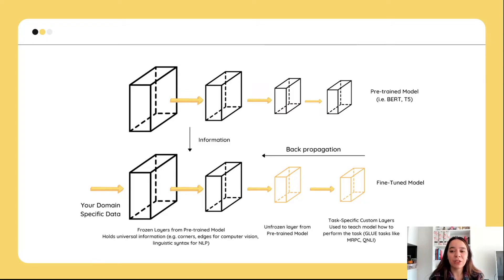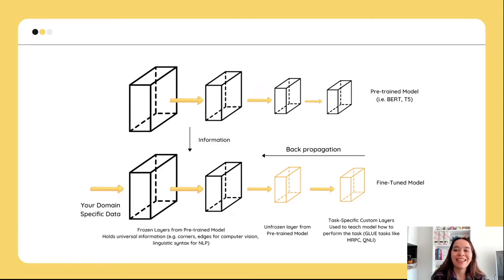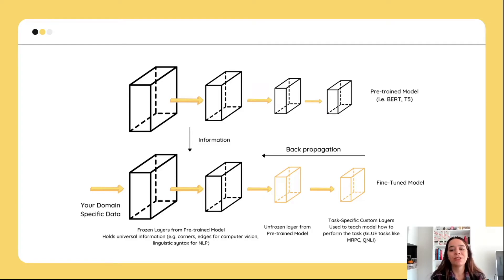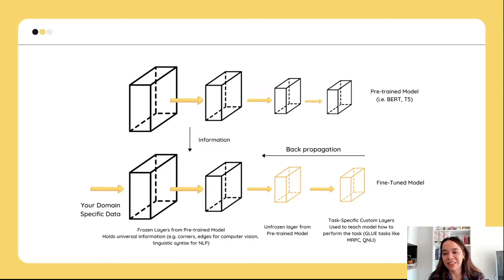First I want to go through a concept called transfer learning. Think that someone has trained a big model for you, trained on data that has the size of petabytes — a model that has billions of parameters. The first layers of this model contain very shallow information like corners and edges for computer vision, and syntactical language information for natural language processing. In the latest layers we have task-specific layers, which might be detecting cars or finding person names in a given text.